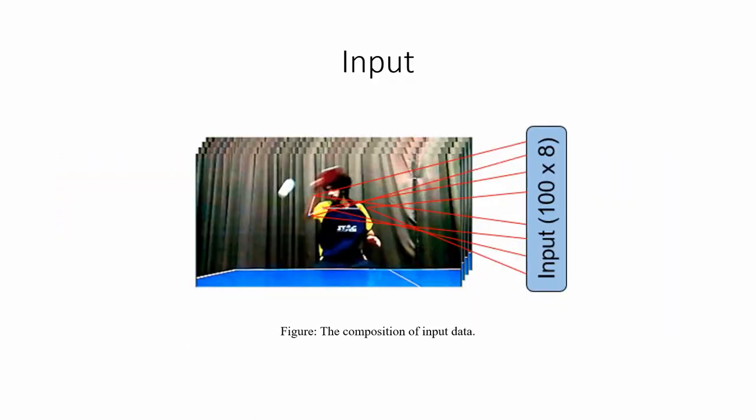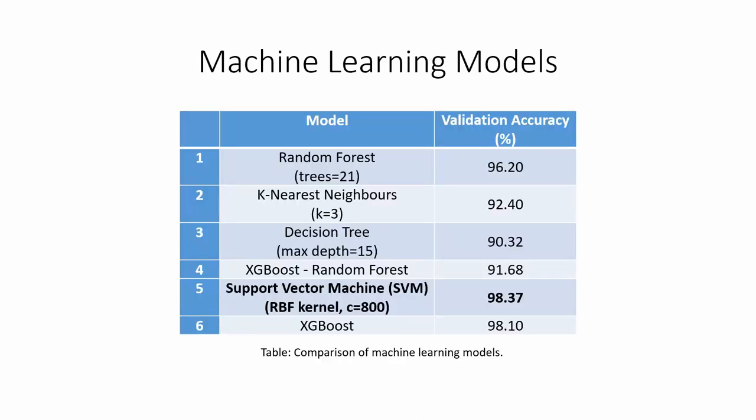After pose estimation, we obtained eight features per frame of a video. As shown, these eight features were the x and y coordinates of the four joints considered. Each video consisted of at most 100 frames. For our machine learning approach of stroke recognition, we first flattened the data resulting in 800 features per video. This eliminated the temporal dimension of the data. This data was then fit using different machine learning models. We found that the SVM classifier with an RBF kernel and a 1 vs rest approach gave us the best results.